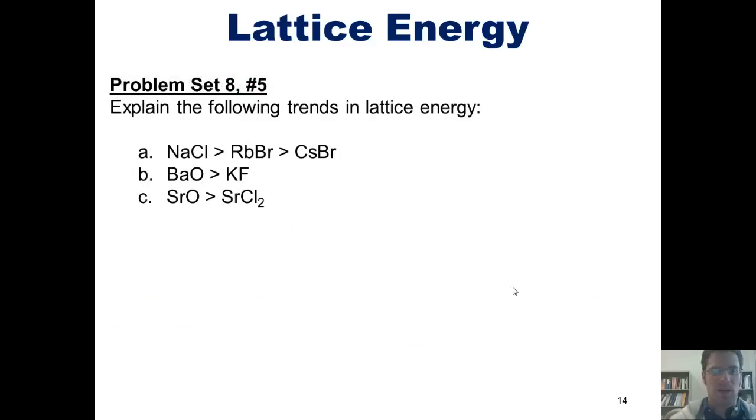That brings us to this question. Explain the following trends in lattice energy. In part A, we can see that sodium chloride has a stronger lattice energy than rubidium bromide, which has a stronger lattice energy than cesium bromide. Why is that the case? In order to answer that, we should remember the equation from the previous slide, that once again as we increase charges or decrease the bonding distance, lattice energy goes up. You'll notice that for the examples in part A, every single cation has a +1 charge and every single anion has a -1 charge. So there's no difference in their charges from one to the next. Thus, their charges can't be contributing to the differing trend in lattice energy. So what is it then? It must be the bonding distance.